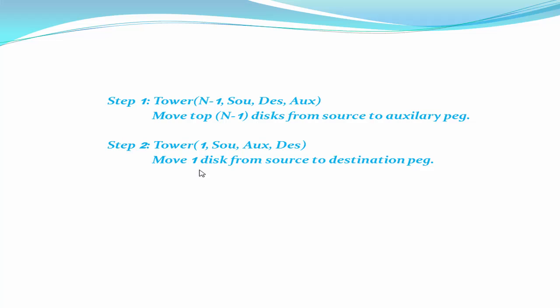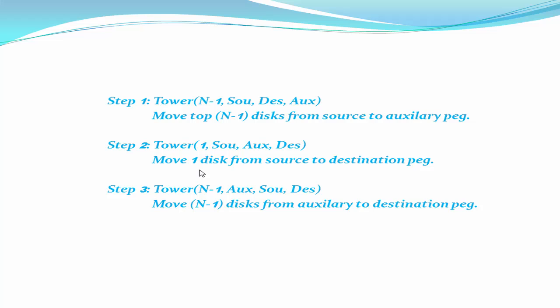Step two: move one disk from source to destination peg. Step three: move n-1 disks from auxiliary to destination peg. We have three disks — red, green, and blue — placed in the source peg, so n equals 3. Therefore we start with tower(3, S, A, D).